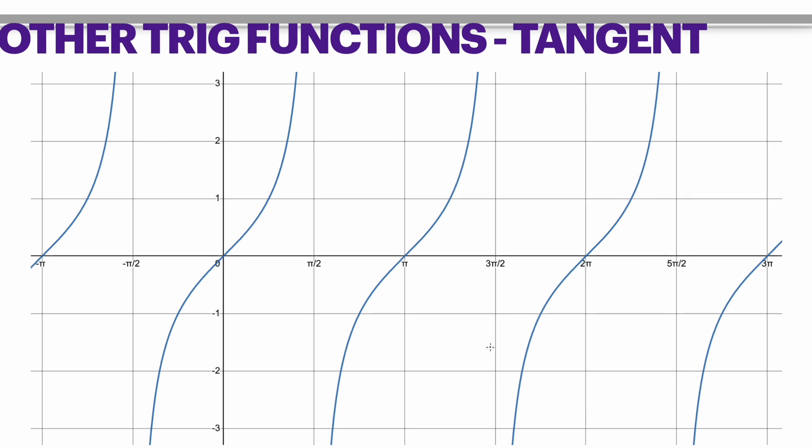Other trig functions are tangent and cotangent. Interestingly enough, the same thing will happen. Asymptotes will get created as well, and that will happen where cosine is 0.